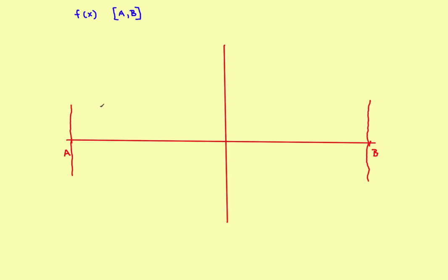What are the extreme values? They're where the function hits either a maximum or a minimum value — the absolute maximum or the absolute minimum within the interval. Suppose the function started here; it's a closed interval so it includes the endpoint. If the graph went up and hit a peak value here, then started back down, that point at the top would be called a local maximum. If the function is increasing and then switches to decreasing, the point where it hits a peak is a local maximum.